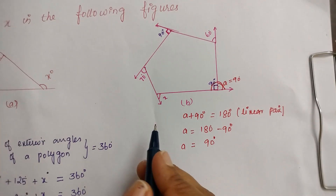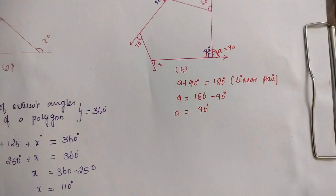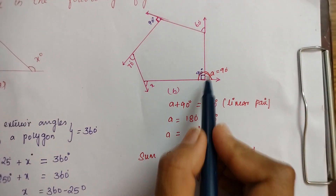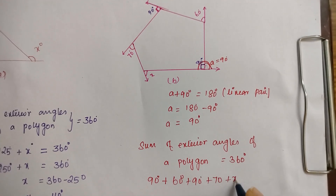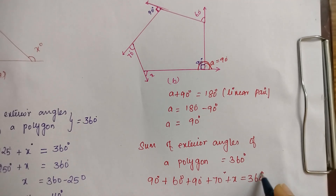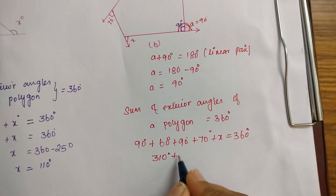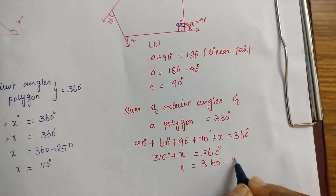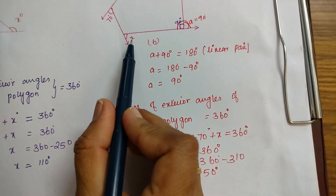Now we can find angle x. We know the sum of exterior angles of a polygon is 360 degrees, and all these are exterior angles. Angle a is 90 degrees, the second angle is 60, the third is 90, and then 70 plus x. Adding these: 90 plus 60 plus 90 plus 70 equals 310 degrees. So 310 plus x equals 360, which gives x equals 360 minus 310, so angle x equals 50 degrees.